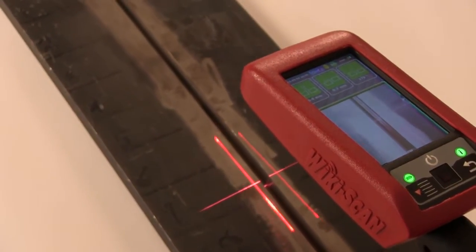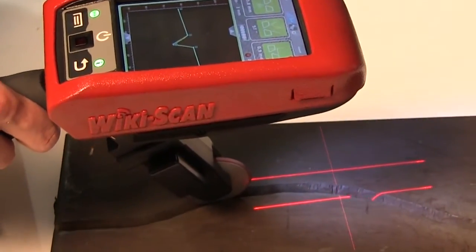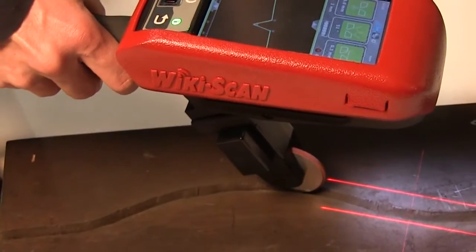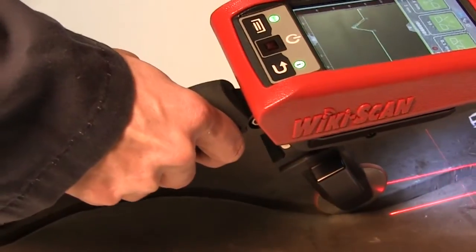SubaRobot has added a new roll encoder option to its revolutionary handheld weld inspection system, Wikiscan. With the new encoder option, you can precisely measure the exact distance traveled by the Wikiscan and compute the length and location of all defects.